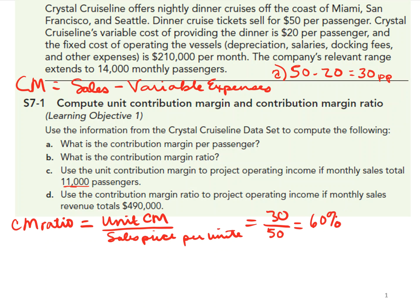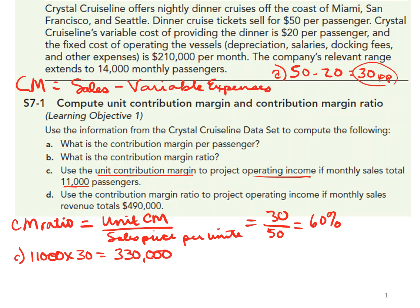What that means is 60% of our revenue will get applied towards fixed costs. Part C asks us to use the unit contribution margin to project operating income if monthly sales total 11,000 passengers. We know we're going to have 11,000 passengers, and each passenger has a $30 contribution margin, so with 11,000 passengers we will have a contribution margin of $330,000.